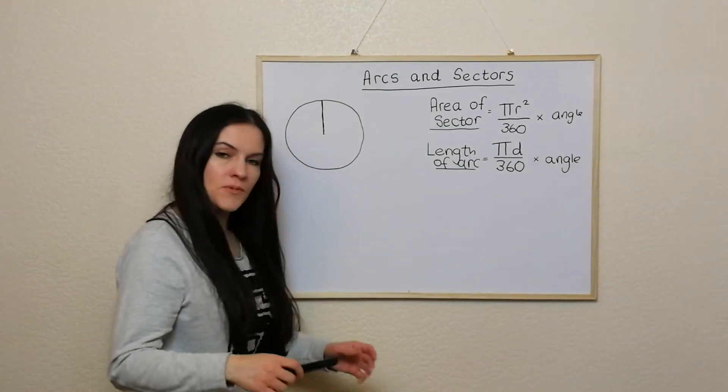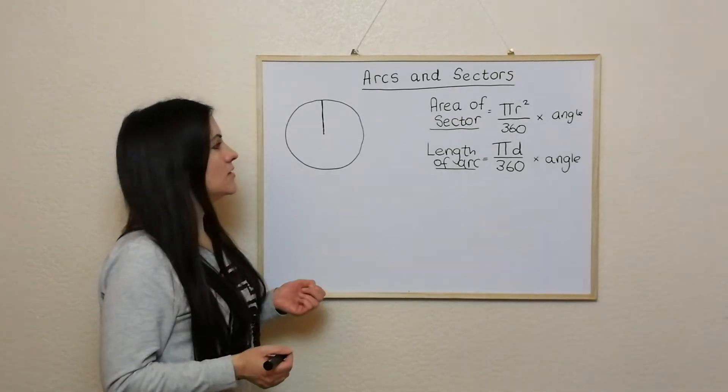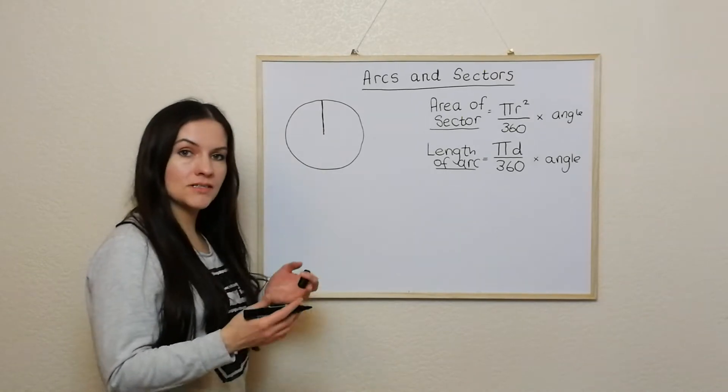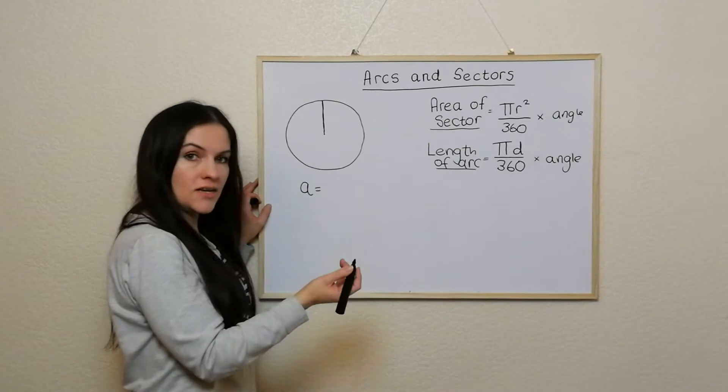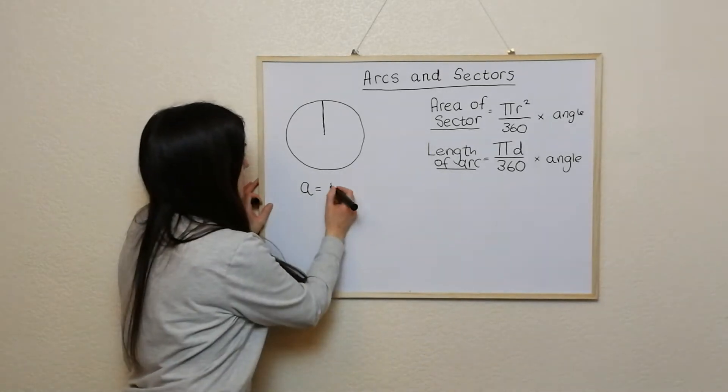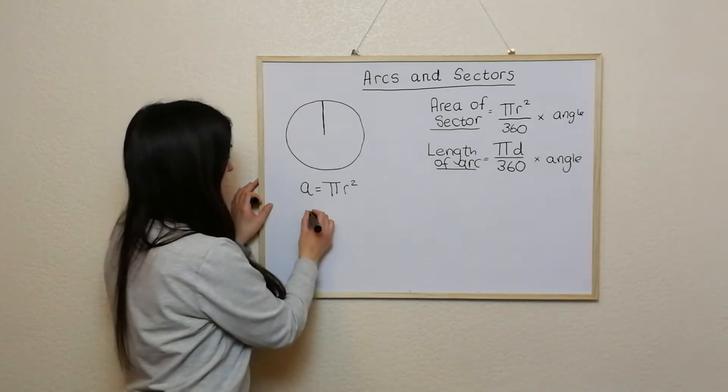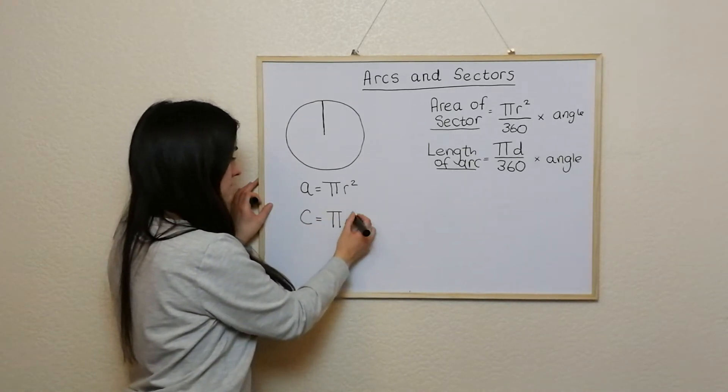A lot of people find this difficult, but what you should really think about is stuff you learned earlier on about area of a circle and circumference of a circle. So when you were getting the area of a circle, area was just pi r squared, and when you were getting the circumference of a circle, it was pi d, well it still is pi d.